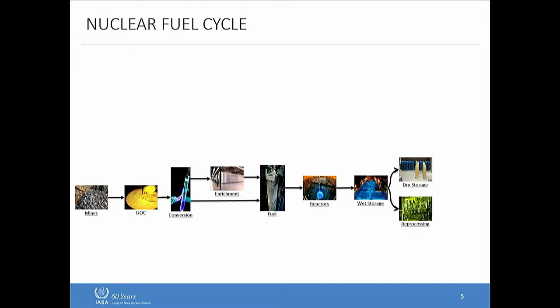Another option is a reprocessing route. Not many countries do this — advanced nuclear fuel cycle states like France, Russia, India, and Japan (currently in standby) do. If you send spent fuel to a reprocessing facility, for civilian purposes you're separating out the fission products and actinides to recover usable uranium and plutonium. This material goes from what we call irradiated direct-use material to unirradiated direct-use material — very attractive from a safeguards perspective. Japan does this for mixed oxide fuels, mixing recovered uranium or depleted uranium with plutonium to make MOX fuel. Another option some countries are exploring is a long-term underground repository — Finland and Sweden are testing this.